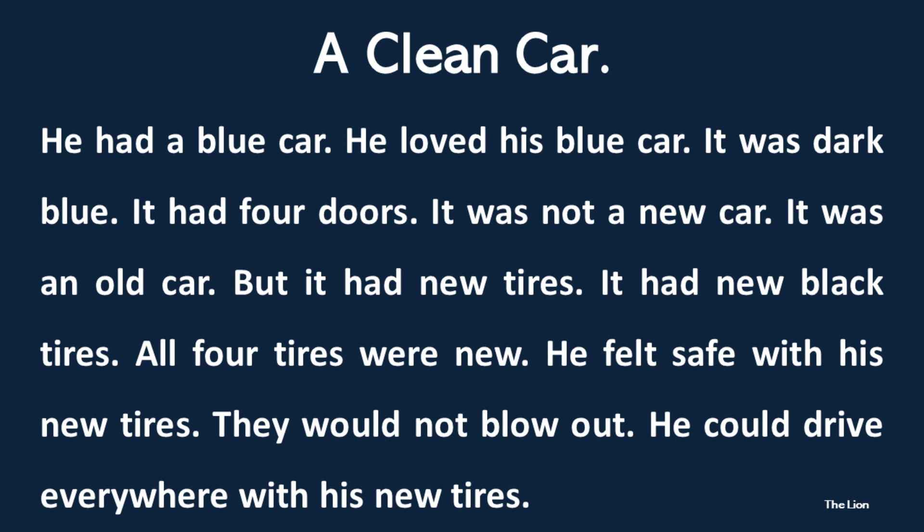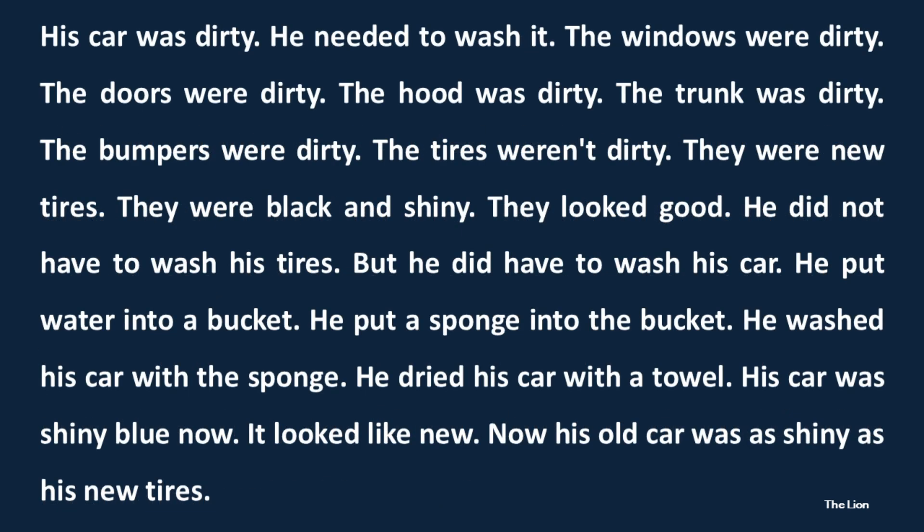A clean car. He had a blue car. He loved his blue car. It was dark blue. It had four doors. It was not a new car. It was an old car. But it had new tires. It had new black tires. All four tires were new. He felt safe with his new tires. They would not blow out. He could drive everywhere with his new tires. His car was dirty. He needed to wash it. The windows were dirty. The doors were dirty. The hood was dirty. The trunk was dirty. The bumpers were dirty. The tires weren't dirty. They were new tires. They were black and shiny. They looked good. He did not have to wash his tires. But he did have to wash his car. He put water into a bucket. He put a sponge into the bucket. He washed his car with the sponge. He dried his car with the towel. His car was shiny blue now. It looked like new. Now his old car was as shiny as his new tires.